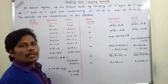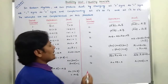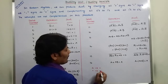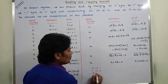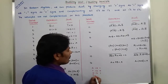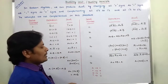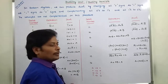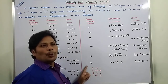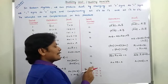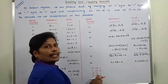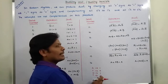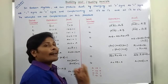In Boolean algebra, we may produce a dual by changing all plus signs into AND signs, and all AND signs into plus signs, all zeros to ones and all ones to zeros. These are the changes that can be done in a given Boolean expression to get the dual. The variables are not complemented.